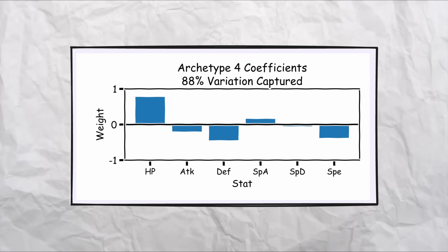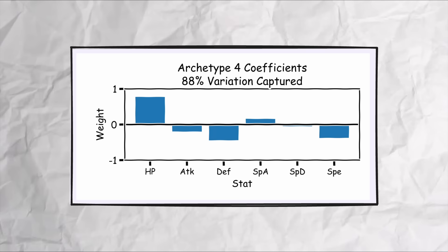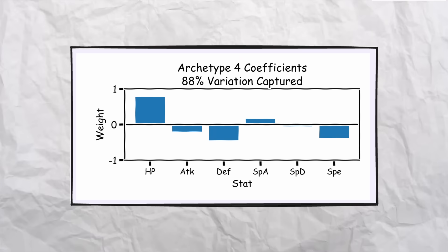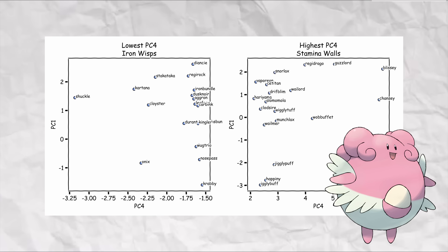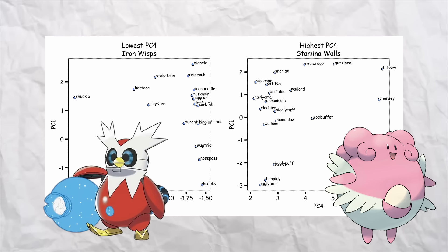By the time we get to the fourth team building archetype, we're already explaining nearly 90% of all the variation in the game. Which is a pretty cool deal. You get to explain 90% of all the stats variation that exists in the game with just 67% of the stats needed, 4 stats instead of 6. That fourth archetype is pretty cool too, focusing on separating the high HP but low defense and low speed mons like Regidrago and Blissey. Calling these stamina walls, since they're walls but only because of their high HP. Separating those from the low HP but high defense and high speed mons like Kartana and Iron Bundle. Which we're going to call the Iron Wisps, which no, is not a cool new future paradox Pokemon. But instead refers to the fact that they have good defense and speed but aren't so great on the HP side.